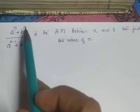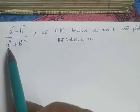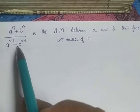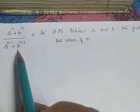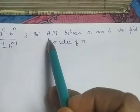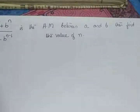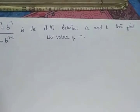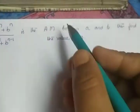The next problem: if a raised to n plus b raised to n, divided by a raised to n minus 1 plus b raised to n minus 1, is the arithmetic mean between a and b, then find the value of n.